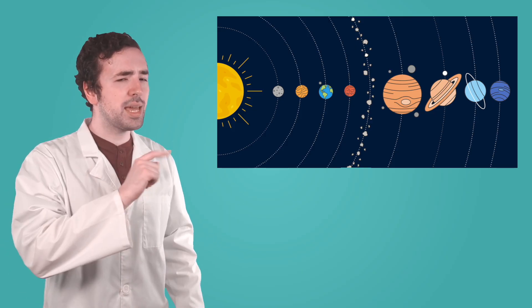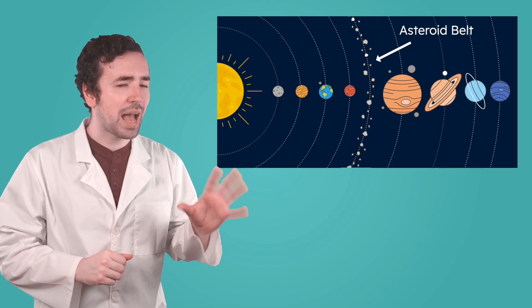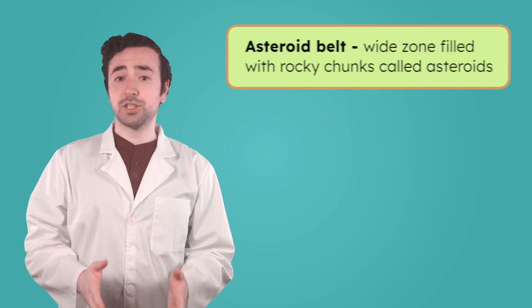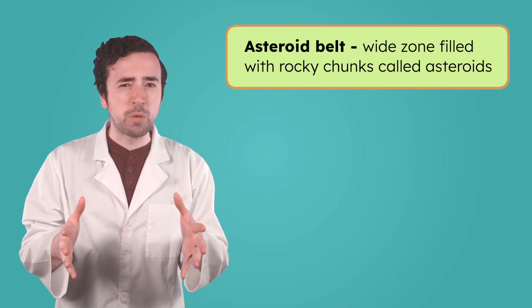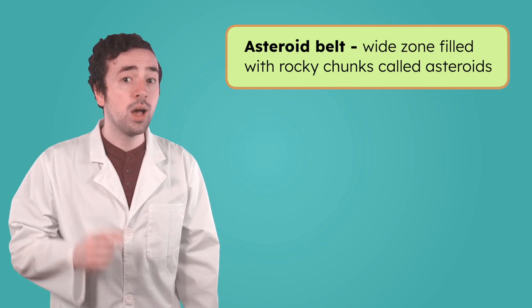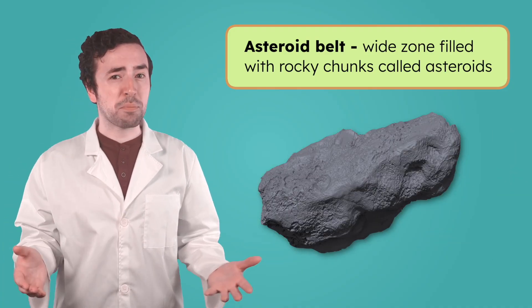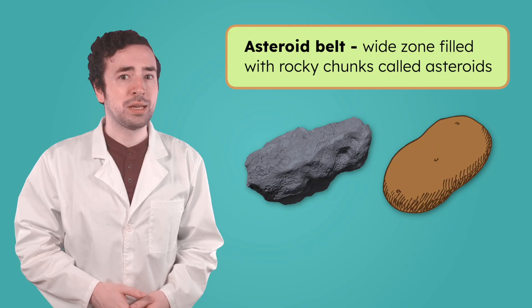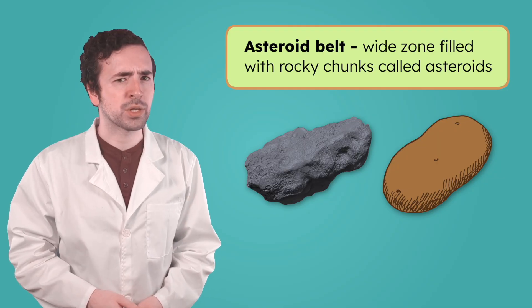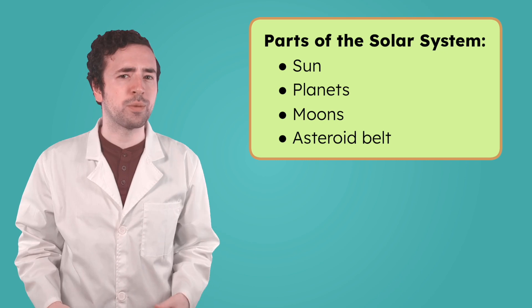Between the inner and outer planets is something very interesting. The asteroid belt. The asteroid belt is a wide zone filled with chunks of rock called asteroids. Unlike the round planets, asteroids are usually small and lumpy. Some people say they look like space potatoes, but I don't think they would taste very good.